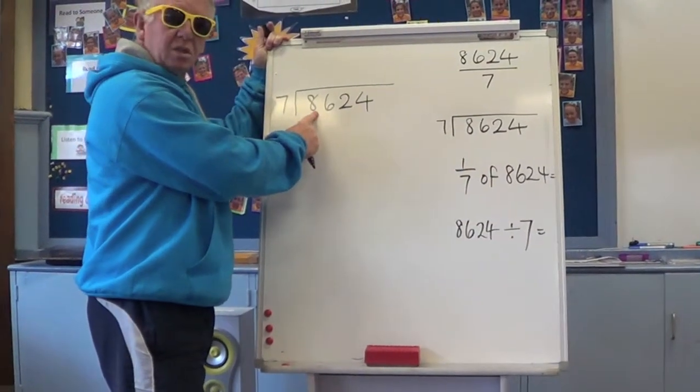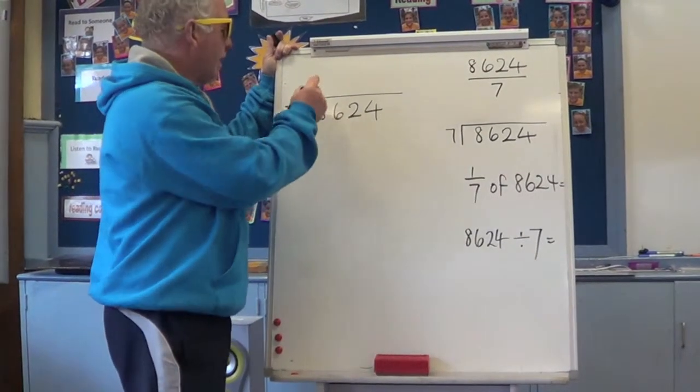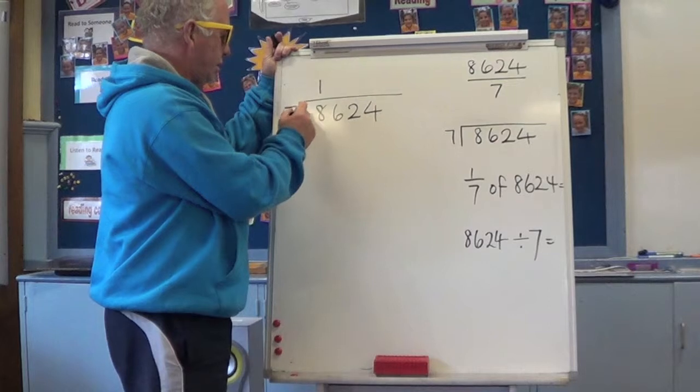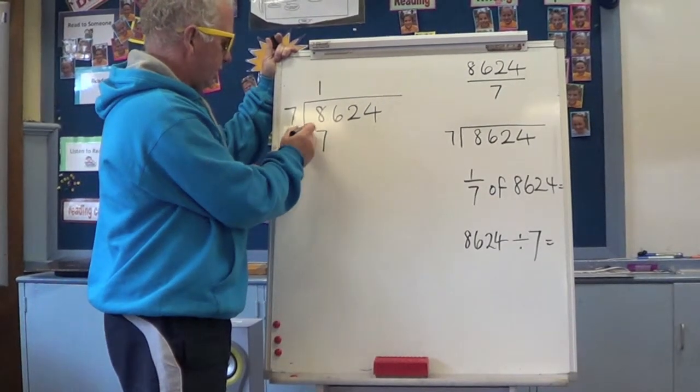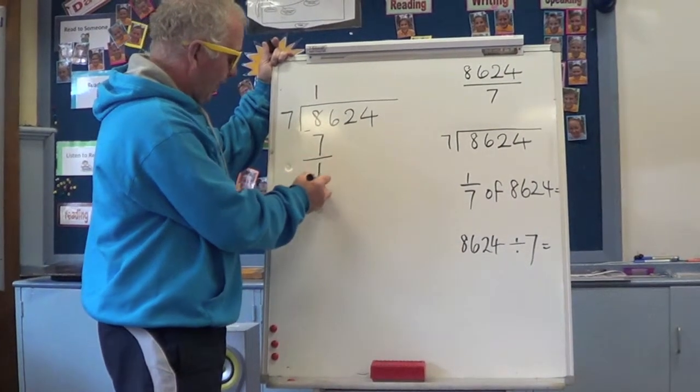So what we do, we say we've got 8,000 shared into 7 groups. Well, they'll each get 1,000 each. 1,000 times 7 is 7,000. So we take 7,000 from the 8,000, we've got 1,000 left.